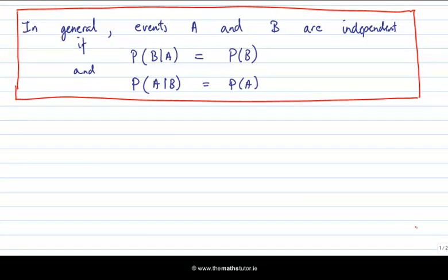In general, if we have two events A and B, we say that they're independent if the conditional probability of B given A is the same as the probability of B — in other words, whether or not A happens does not affect the likelihood of B. And the probability of A given B equals the probability of A — whether or not B happens does not affect the likelihood of A. That's one way to express independence, but it's not the most common way. What I'm going to do now is take this definition and use it to arrive at the more common way of expressing independence.